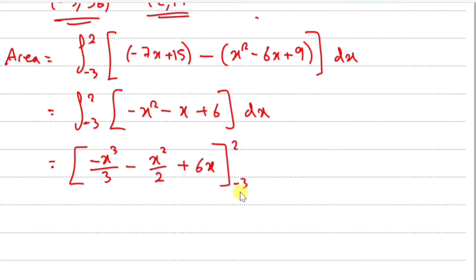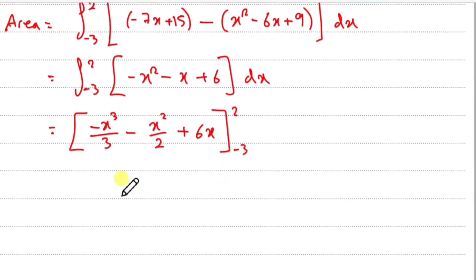These are the values to replace x with. Replace all of this with 2, then subtract it with all of it at -3. So doing it, put one bracket, replace with 2: -2³/3 - 2²/2 + 6(2).